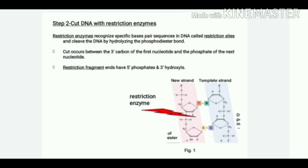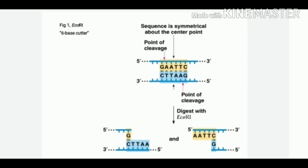The second step involves cutting the DNA with a restriction enzyme. As we know, restriction enzymes recognize specific base pair sequences in DNA called restriction sites and cleave the DNA by hydrolyzing the phosphodiester bond.